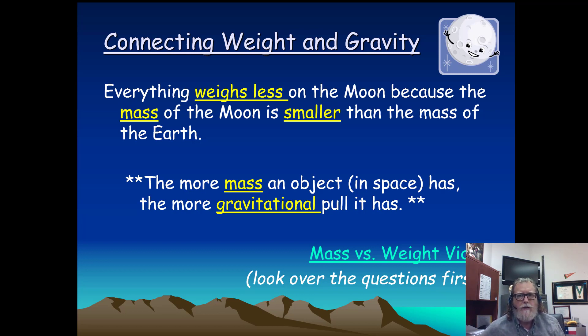But fundamentally, the Moon is one-sixth the mass of the Earth, so everything weighs about one-sixth on the Moon compared to what it weighs on Earth. So if you weighed sixty pounds on the Earth, you would weigh ten pounds on the Moon. That's the way it works. Alright, onward.